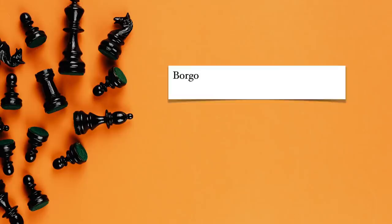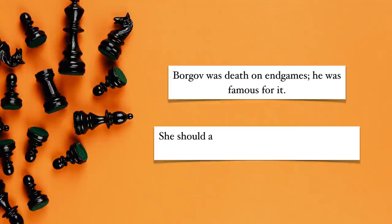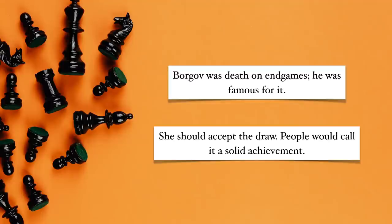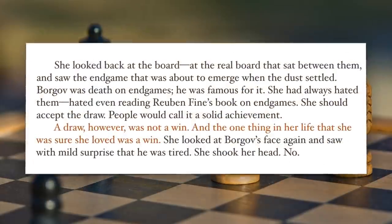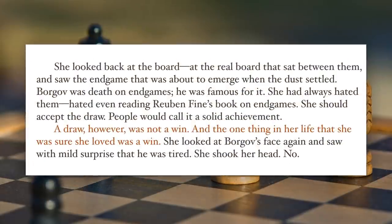Beth weighs her options, and for a paragraph it seems like she's going to take the draw. Knowing that Borgov was death on endgames — he was famous for it — and that she should accept the draw. People would call it a solid achievement. But then, with one paragraph break, we see her thoughts shift: a draw, however, was not a win, and the one thing in her life that she was sure she loved was a win. She decides to keep going.